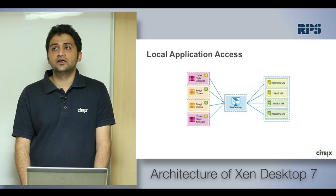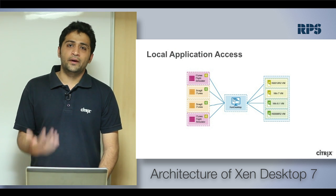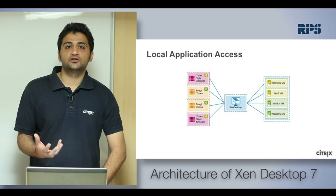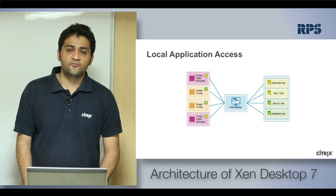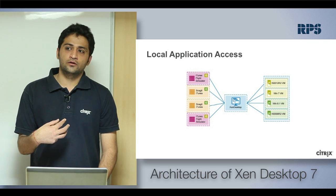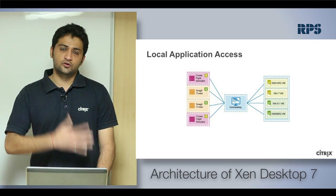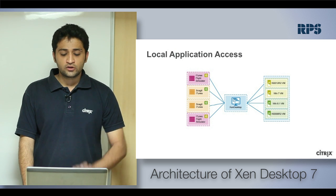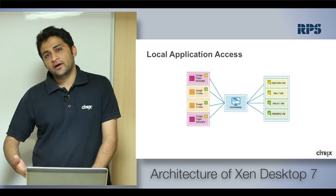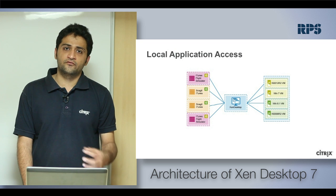You have local application access. Citrix used to have a product called Citrix Streaming Profiler, but they are no longer developing it and are supporting Microsoft App-V for application streaming instead. As an administrator you can publish App-V packages through App-V and use XenDesktop to publish them to end users, who can download application packages onto their machines and run them locally. Citrix Streaming Profiler will not be seen from 7.x onwards; App-V is a separate Microsoft product with its own training.